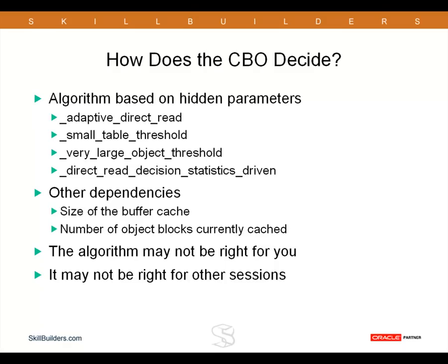If you google around, you'll find various people have attempted to reverse engineer the algorithm. They'll tell you that if the table is more than five times the small table threshold, or whatever, then you will always get a certain type of access method. I'm not going to present those algorithms because I haven't reverse engineered them to my own satisfaction yet. But the end result is that the algorithm Oracle uses may not be right for you in terms of your session, and furthermore, it may not be right for any other sessions. This change in behaviour for serial and parallel full table scans can have a huge effect on the performance of your applications, and you have to investigate what's going on.